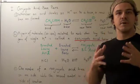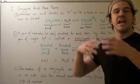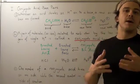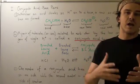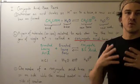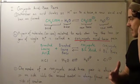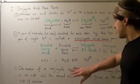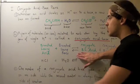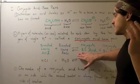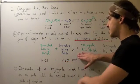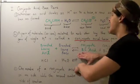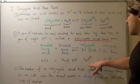Likewise, if someone gives you a base and asks you to find the conjugate acid, you simply add an H-ion to the base to get the conjugate acid. So if you're given an acid and need to find its conjugate base, subtract an H. If you're given a base and need to find its conjugate acid, add an H.